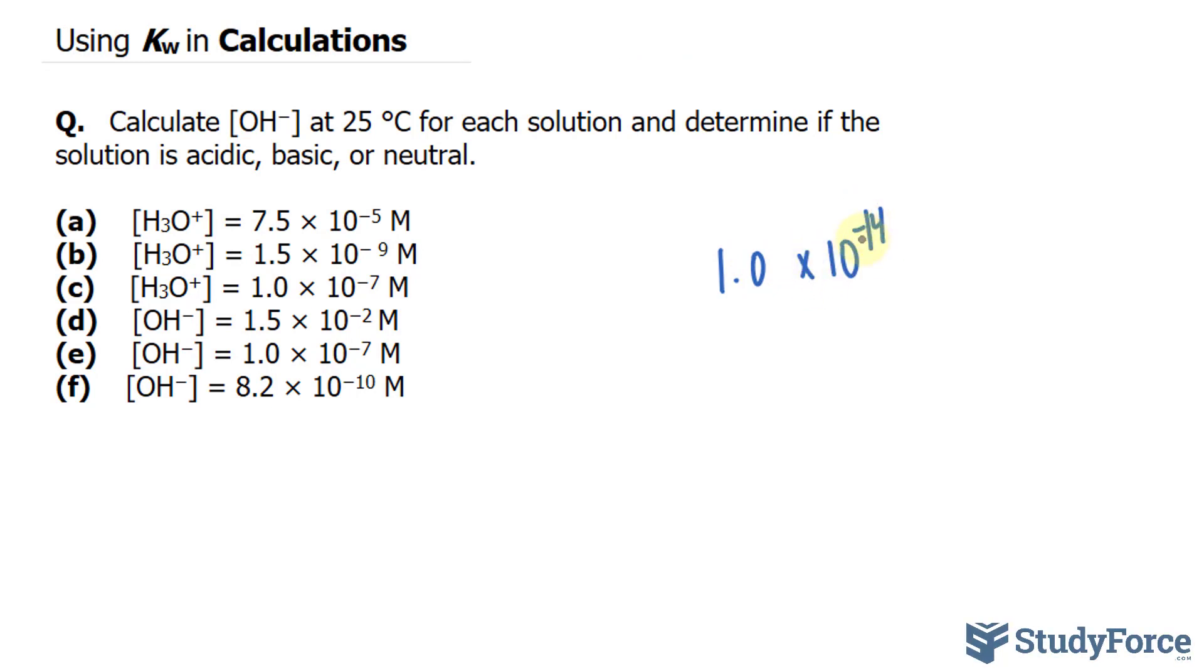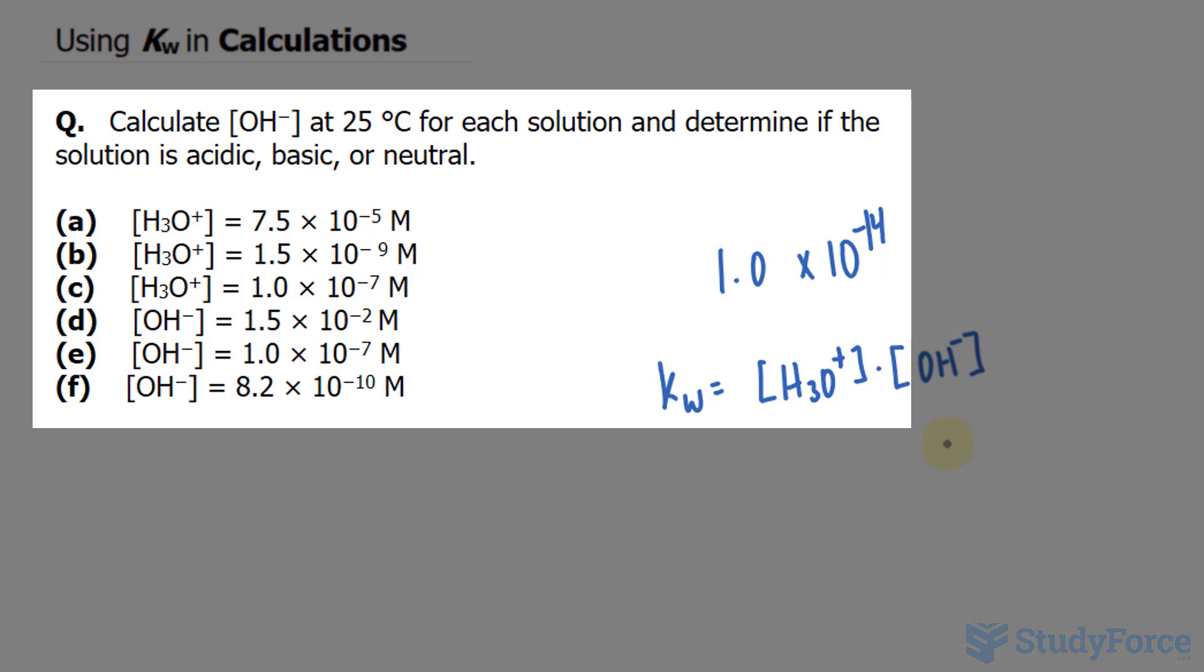It doesn't have any units. To calculate Kw, you multiply the concentration of the total number of hydronium ions times the concentration of hydroxide anions. And we've been given, in question A, the concentration of H3O+.